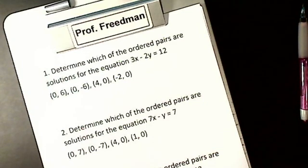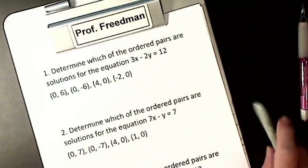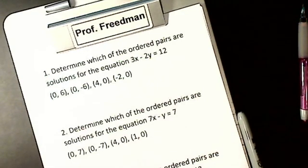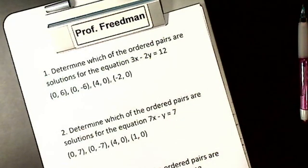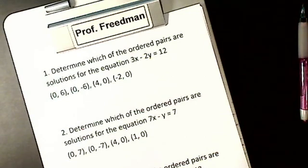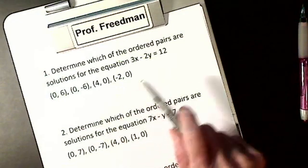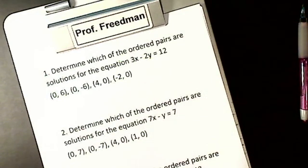Before we start graphing straight lines, we want to identify solutions of a two-variable equation. If I have something like: determine which of the ordered pairs are solutions for the equation 3x minus 2y equals 12. The solution is an ordered pair, and I need to know which pair is a solution to that equation. By definition, a solution means that if I substitute it in, I will get a true statement.